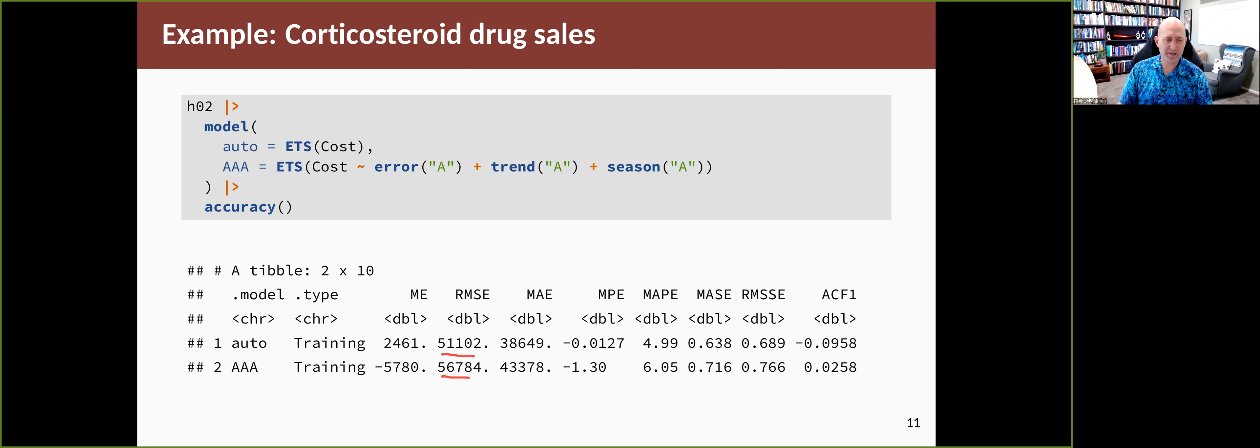These are relatively comparable—you can compare them on the training set if you've got the same number of parameters. Actually, the AAA model has one fewer parameter than the auto model (the difference is the damping parameter), but the difference between them is huge. That suggests that the automatically chosen model is much better fit to the data and is probably going to be a much better forecast as well.